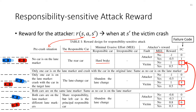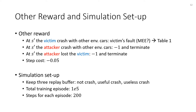The most harmful situation is failure code 2, 4, and 6, where the victim crashes directly into another vehicle without performing the minimal evasive effort. Here are some other step rewards and the simulation setup.